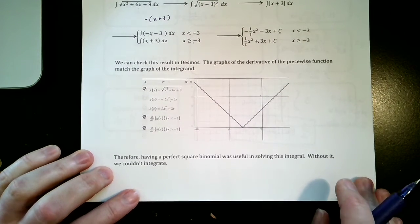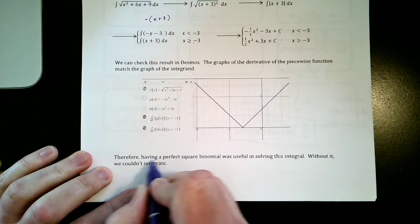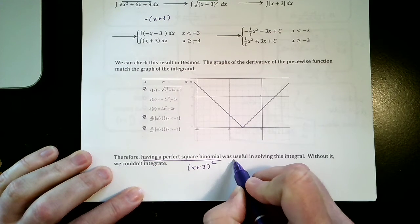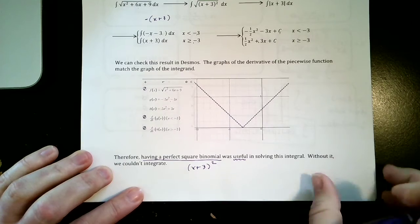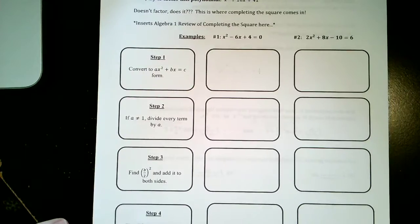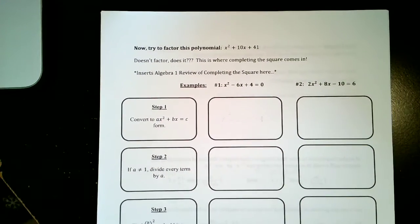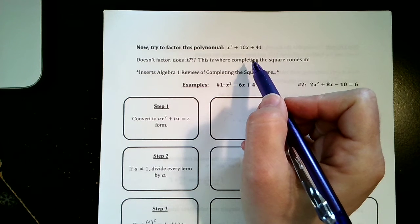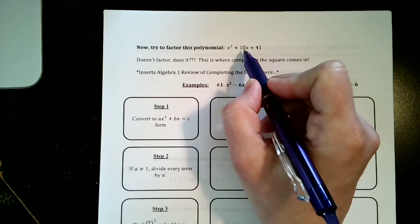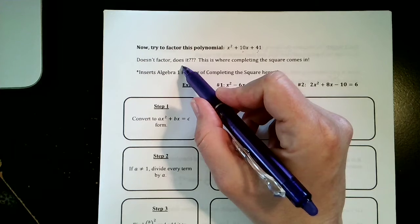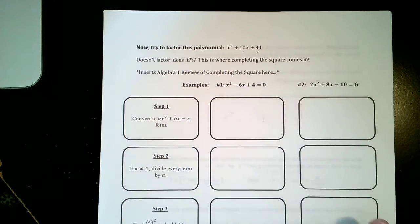The meaning behind all of this is that having a perfect square binomial (x + 3)² was definitely useful in evaluating this integral, otherwise we would not have been able to do it. Let's try to factor this one: x² + 10x + 41. Well, 41 is prime so its only factors are 1 and 41 and they certainly don't add to 10, so we can't factor it. This is where completing the square comes in.